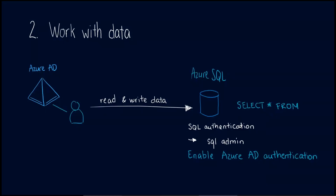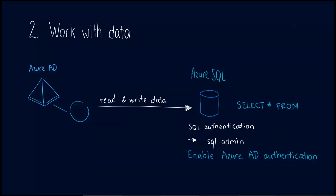We also might have cases where we have an application reading and writing data — it can be any service or custom application that needs to use Azure SQL data. For that, we just go through the app registration steps again. Same mechanism, nothing different. But there's another scenario: sometimes we might be using another Azure service to read data from Azure SQL. For example, we might use Azure Data Factory to copy data from Azure SQL to a data lake or some other destination. The question then is: what is the identity for Azure Data Factory, and how do we find it?